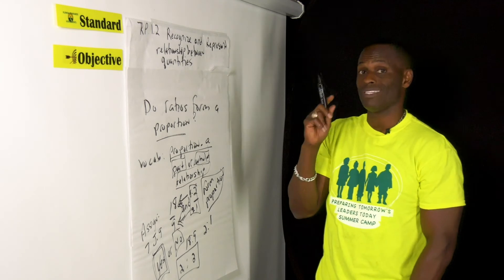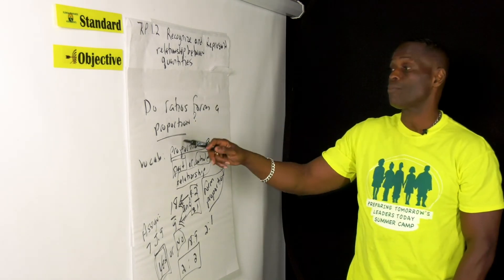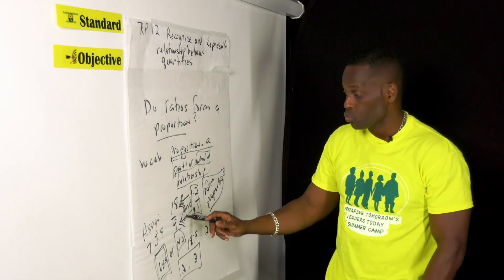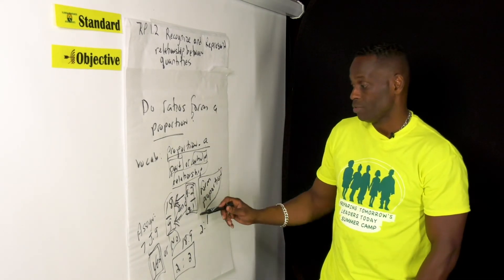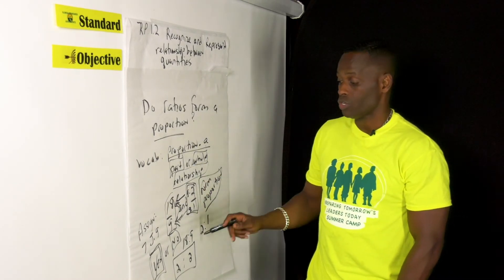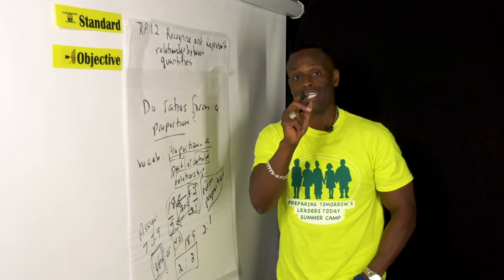So remember boys and girls, you have to be able to identify: do ratios form a proportional relationship? Do these two ratios have a relationship where one is either a part or equal to the whole? And the answer to this is yes.